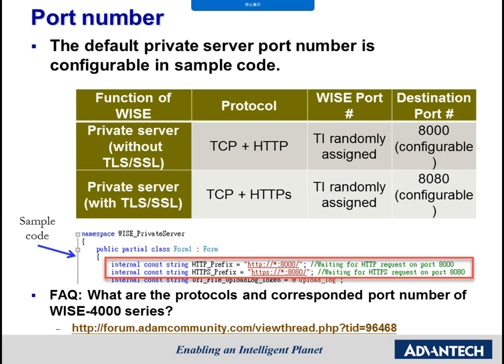There is a manual for the private server sample code located in the same folder as the code. This manual shows how to implement TLS/SSL connection and some troubleshooting instructions. The default private server port number is configurable in the sample code. The default setting without TLS/SSL security connection uses port 8000, and port 8080 is used by default when TLS security connection is enabled. More information and configuration port numbers for different private or public cloud services can be found in the FAQ on the support portal or ADAM forum.